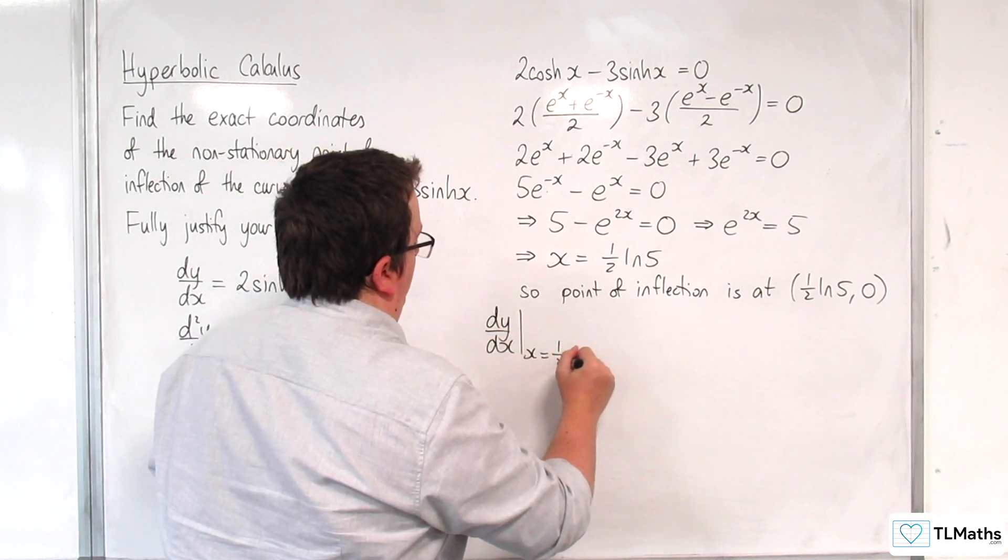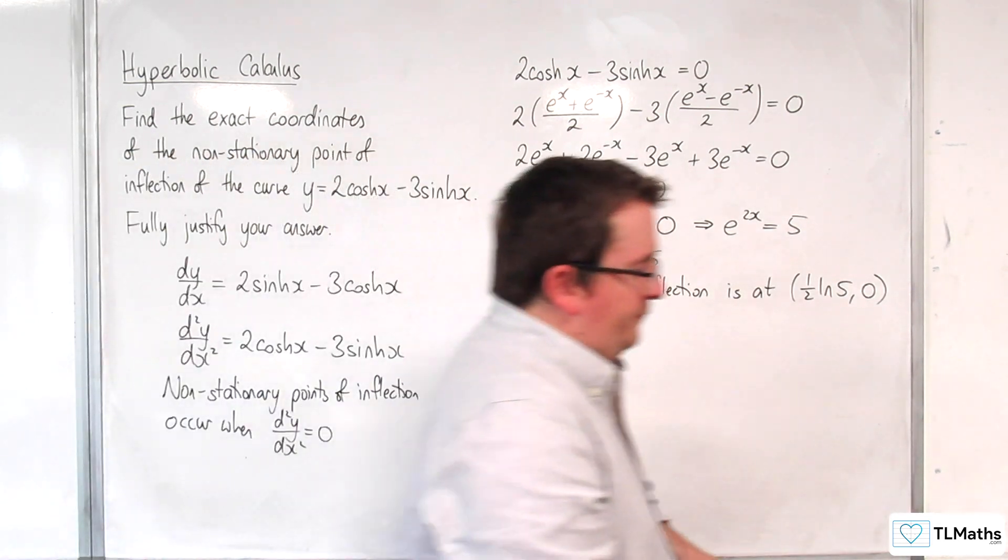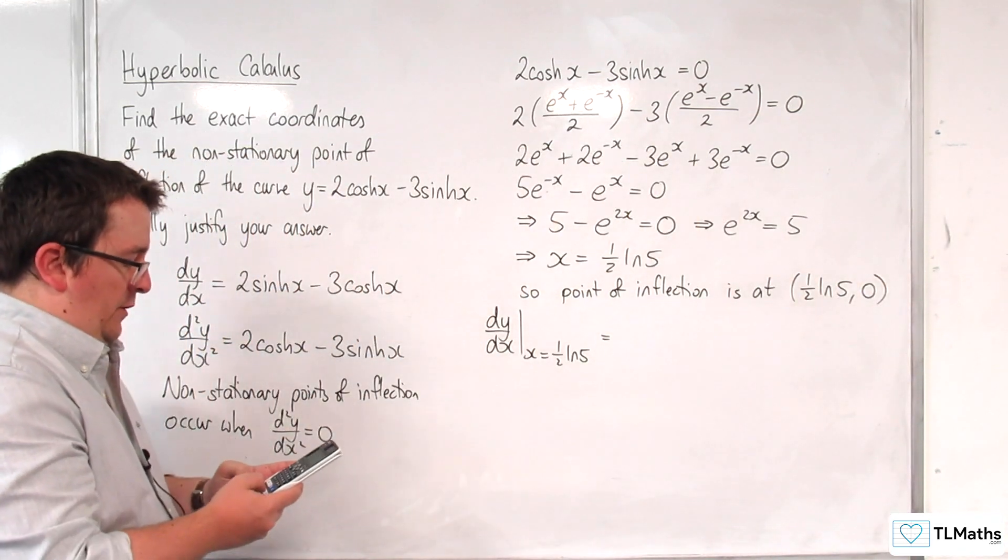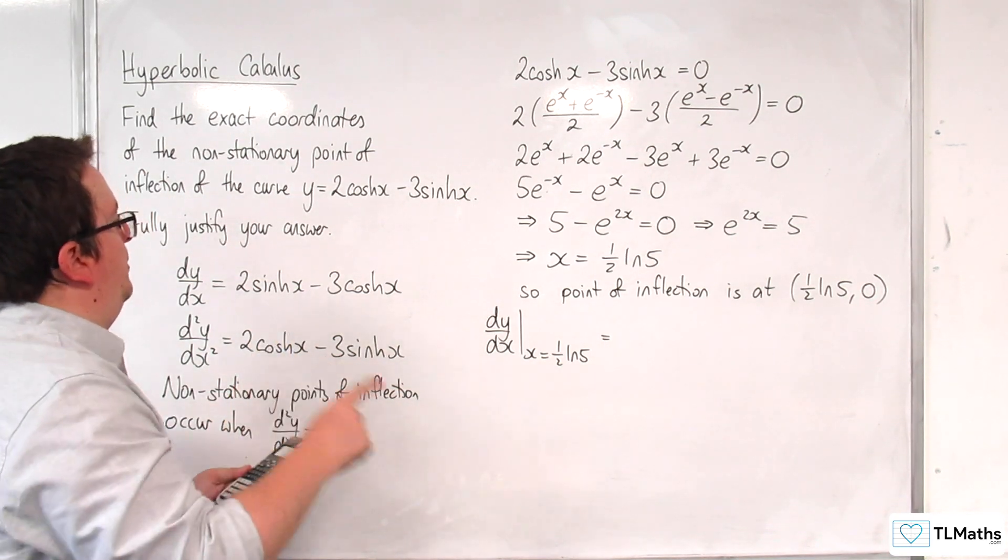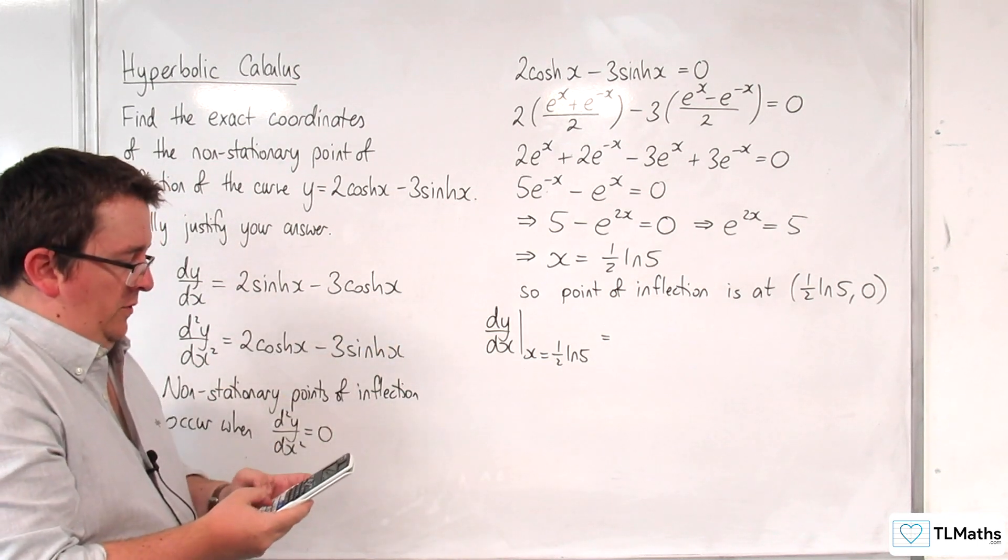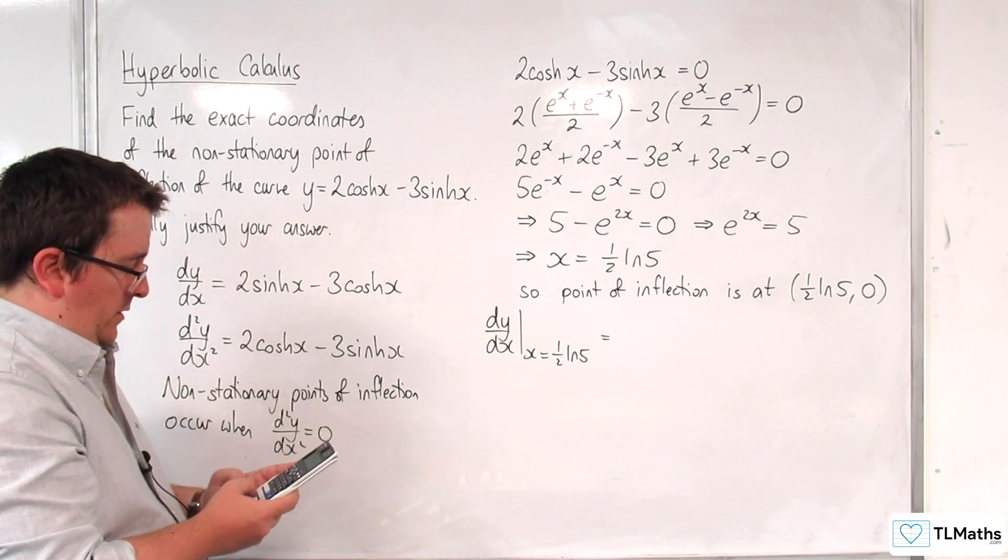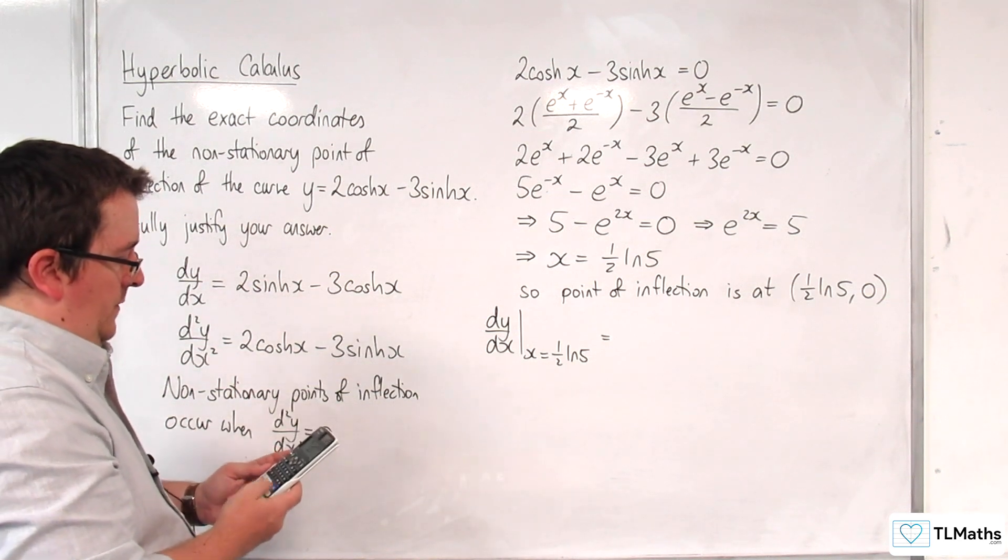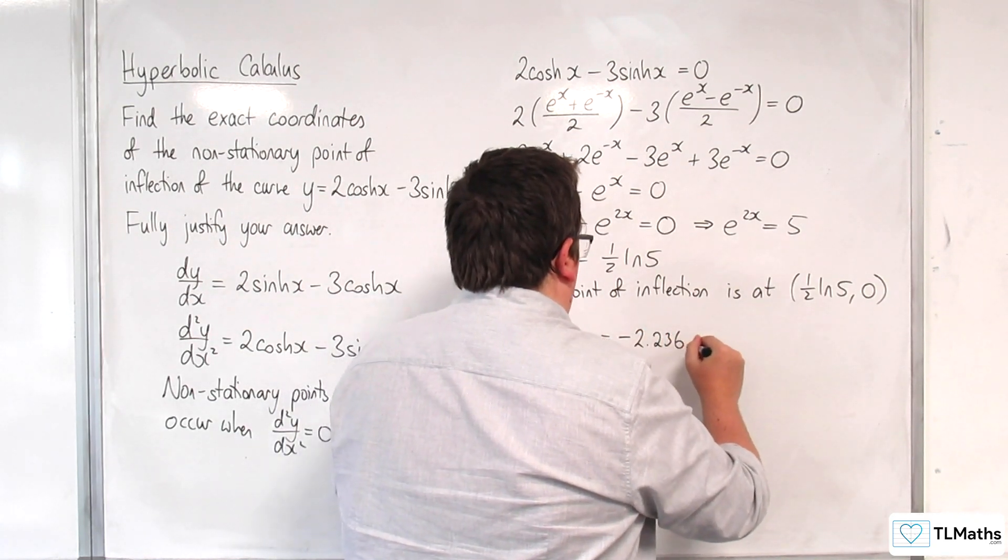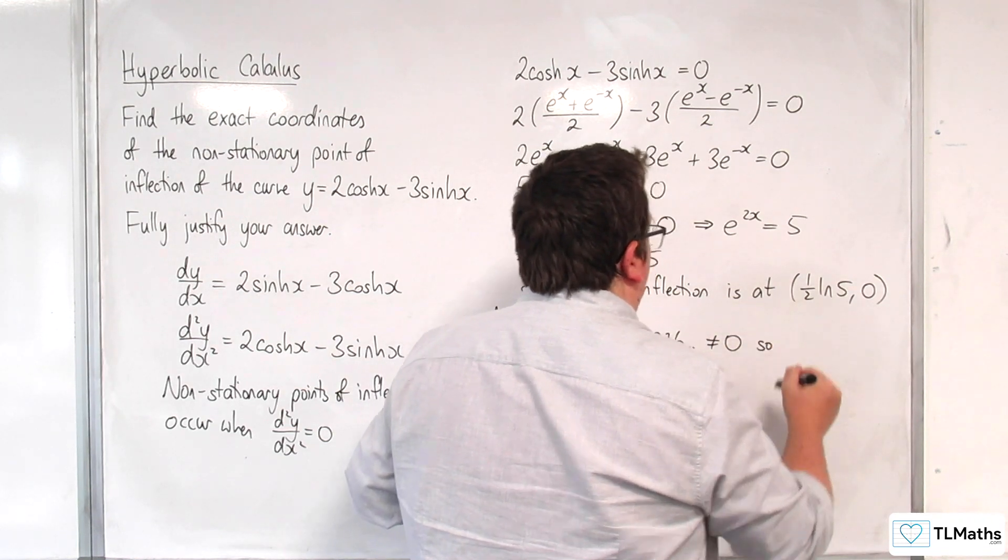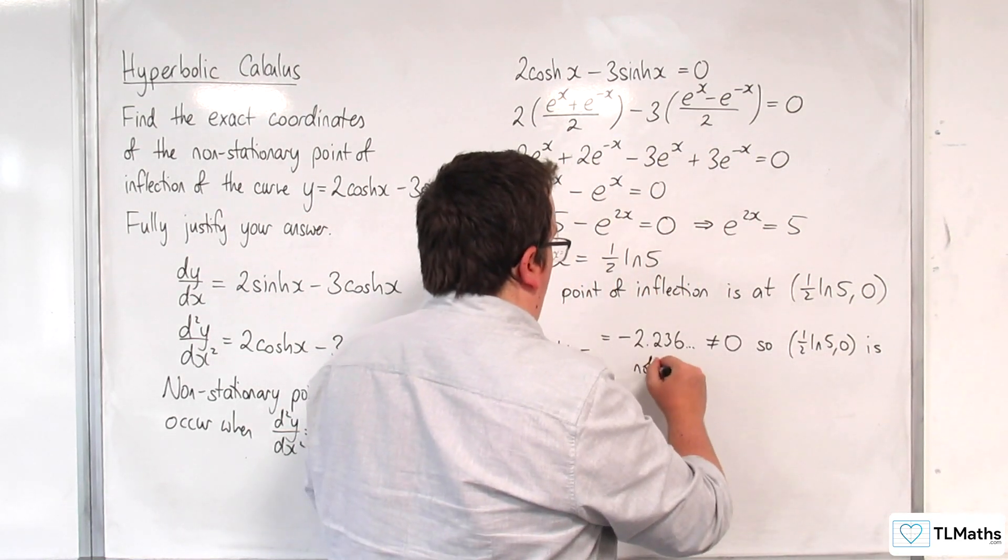So evaluate dy/dx at ½ln(5). So I'm going to put in ½ln(5) into my calculator. And then I'm going to substitute that into here. So 2 times sinh the answer, take away 3 times cosh the answer. And we get -2.236, which is not equal to 0. So that is not a stationary point.